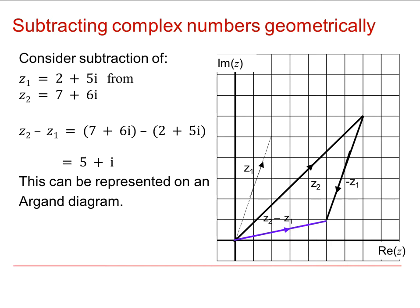gives us that result which is z2 minus z1. So we consider subtraction of negative numbers z2 minus z1 as being the same as z2 plus the negative of z1. And the negative vector is in the opposite direction and exactly the same length.